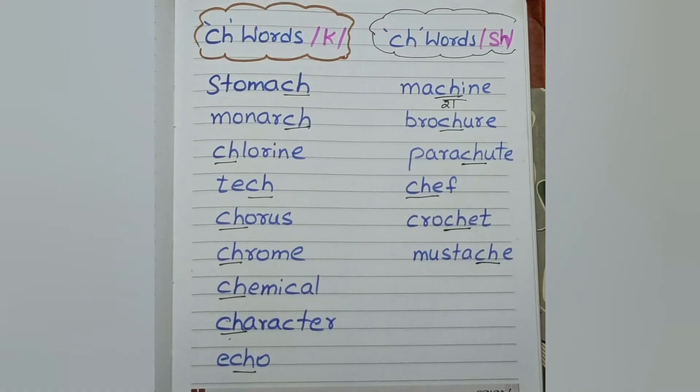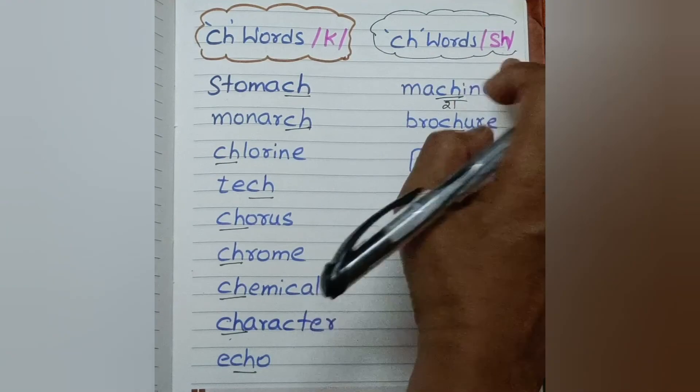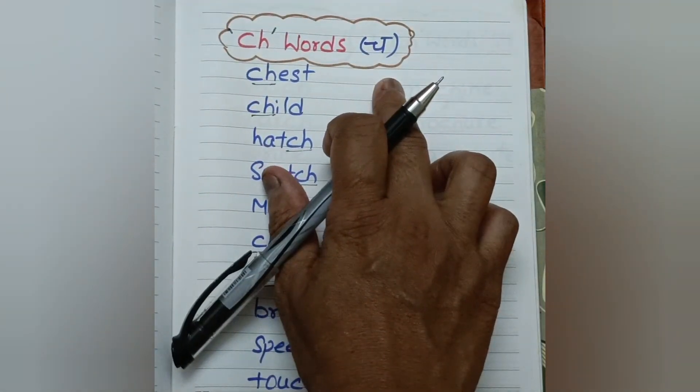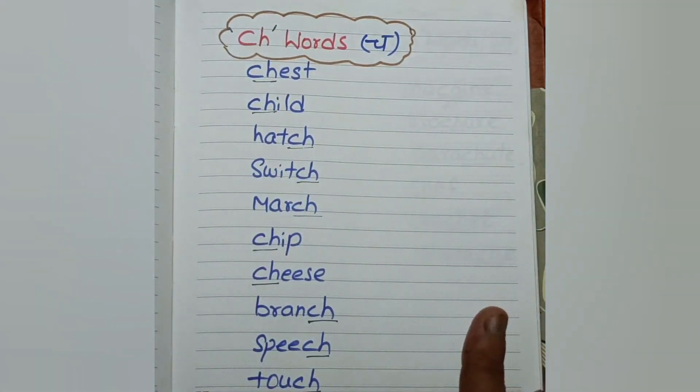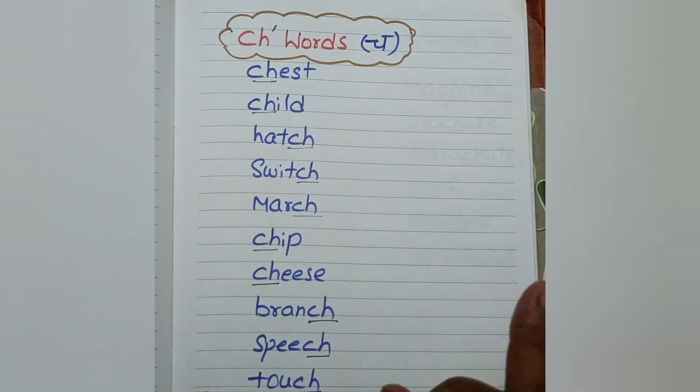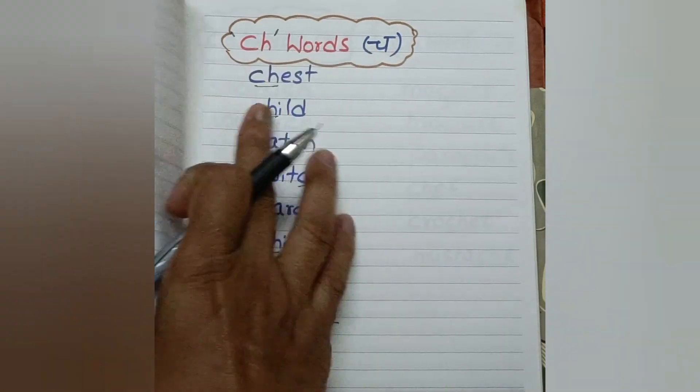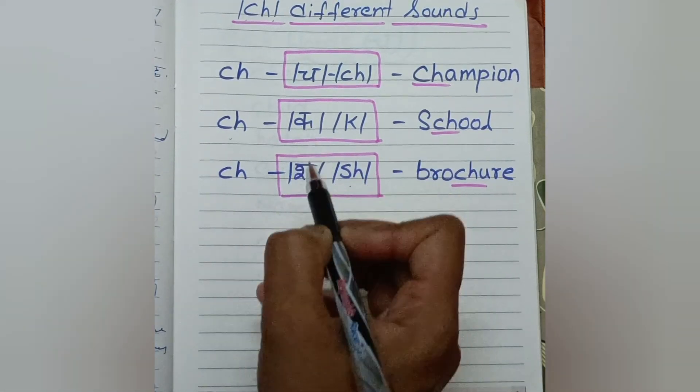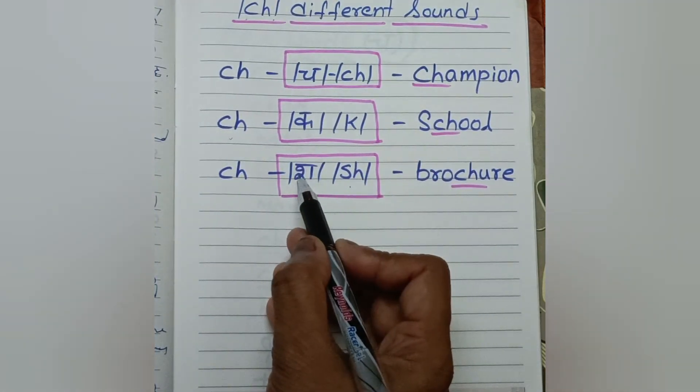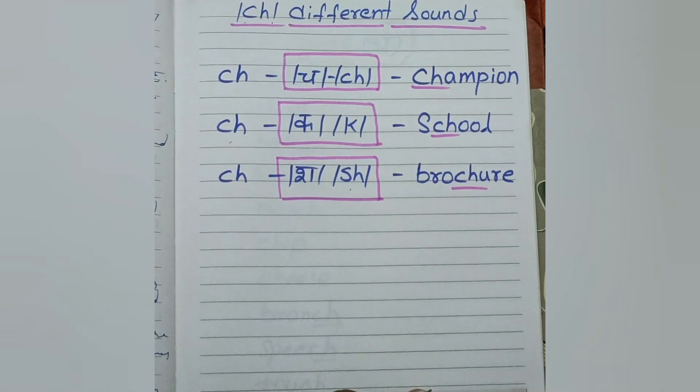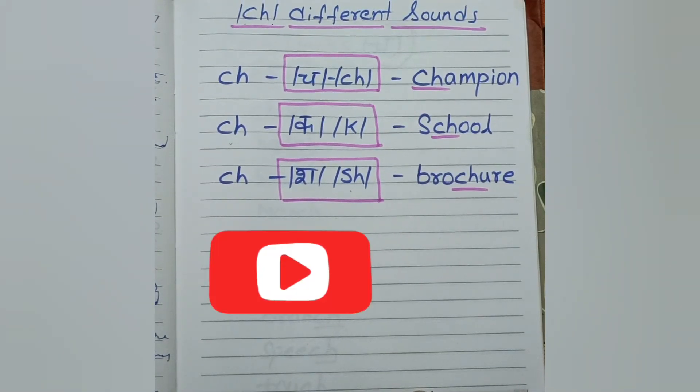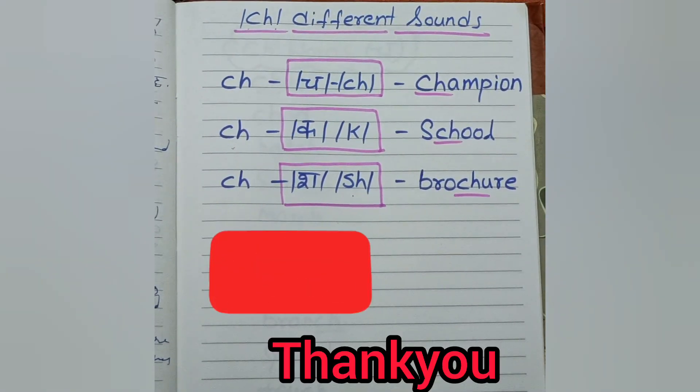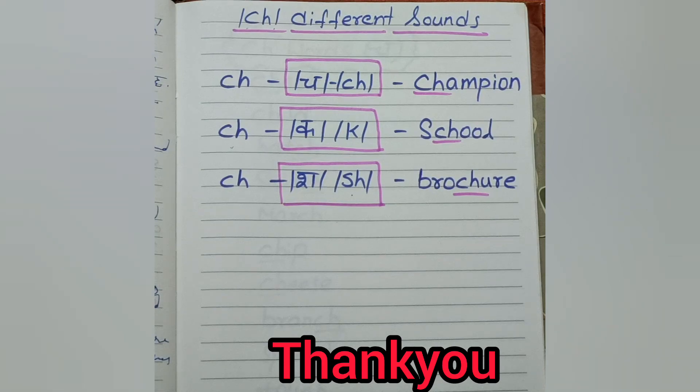So these are the words of K sound, SH sound, and CH sound. There are three different sounds of CH: one is CH, second one is K, and the third one is SH. Hope my video would be helpful to you. If you feel so, please like, share, and subscribe. Thank you so much for watching.